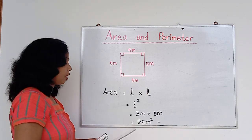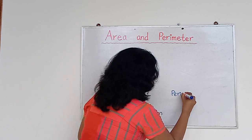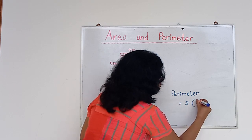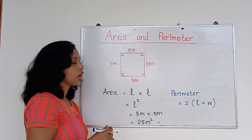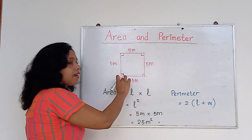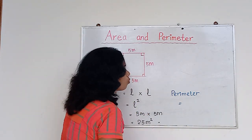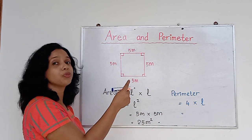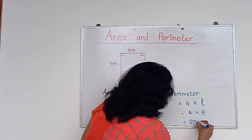And how about the perimeter? The formula was 2 times (L plus W), but here we don't have separate L and W. So we add all four sides: 5 plus 5 plus 5 plus 5. For a square, this becomes 4 times L. So it is 4 times 5, which is 20 meters.